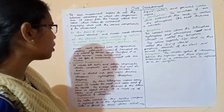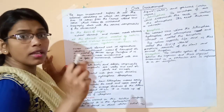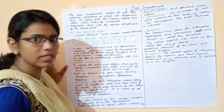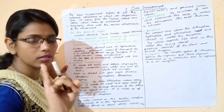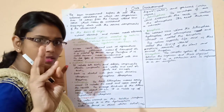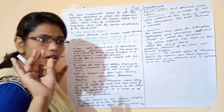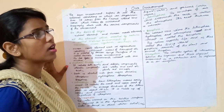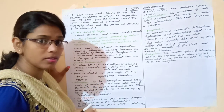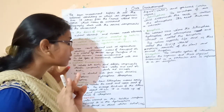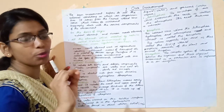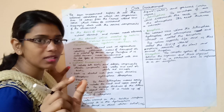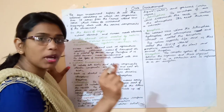Now let's discuss the natural environment in detail. What things come under the natural environment? Plants, animals, mountains, rivers, air, water, and more. In the natural environment, components are classified into two groups: biotic components and abiotic components.